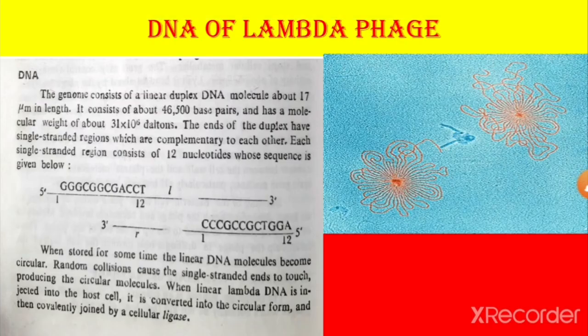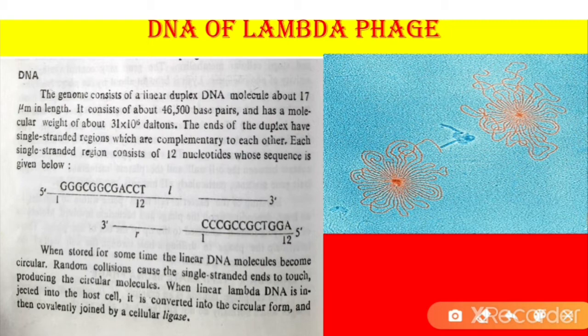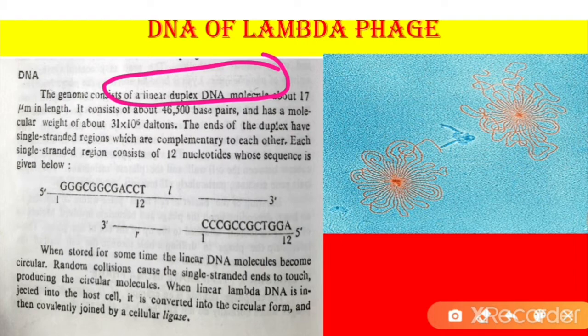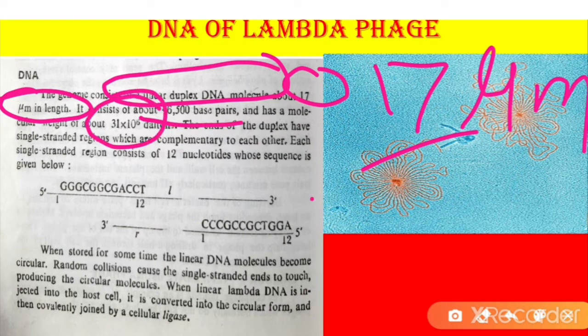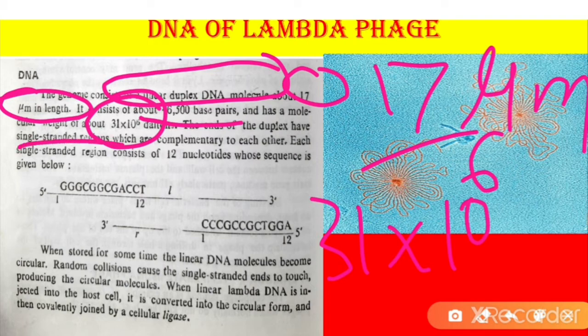The DNA is the genetic material of lambda phage, which is a linear duplex DNA in nature. It is about 17 micrometers in length, consists of about 46,500 base pairs, and has a molecular weight of 31 × 10^6 daltons. The ends of the duplex have single-stranded regions which are complementary to each other.